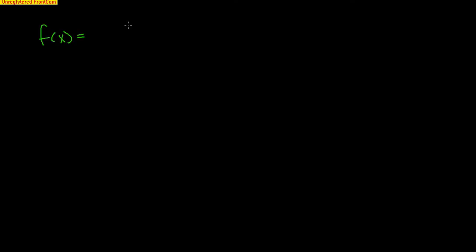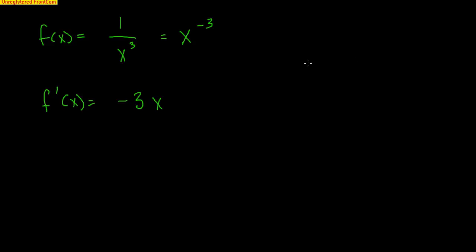We can continue using these rules in some unusual situations by rewriting. Consider 1 over x to the 3rd. You might think it's tough, but if you rewrite it as x to the negative 3, it becomes easy. Exponents on the bottom can be written as negative exponents, so these two expressions are the same. Now you can use the power rule: negative 3 falls down in front, and negative 3 minus 1 gives an exponent of negative 4. Never leave a final answer with negative exponents, so this becomes negative 3 over x to the 4th.